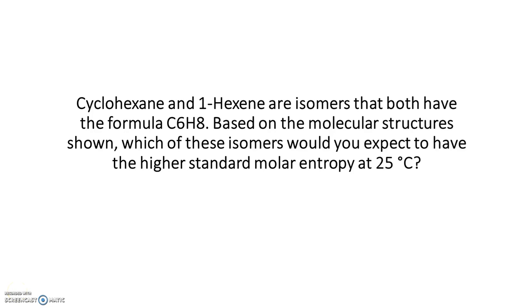Cyclohexane and 1-hexene are isomers that both have the formula C6H8. Based on the molecular structures shown, which of these isomers would you expect to have the higher standard molar entropy at 25 degrees Celsius?